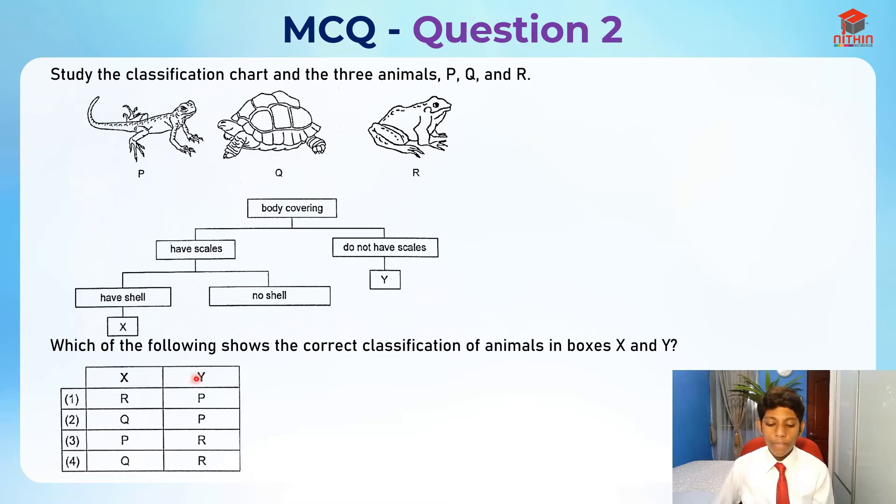Which of the following shows the correct classification of animals in boxes X and Y? Has scales, has shell - so has shell, the only one we can see is this turtle. The turtle actually has a shell which it uses as its home as well. This shell is actually really good for turtles to hide in when their predators come.